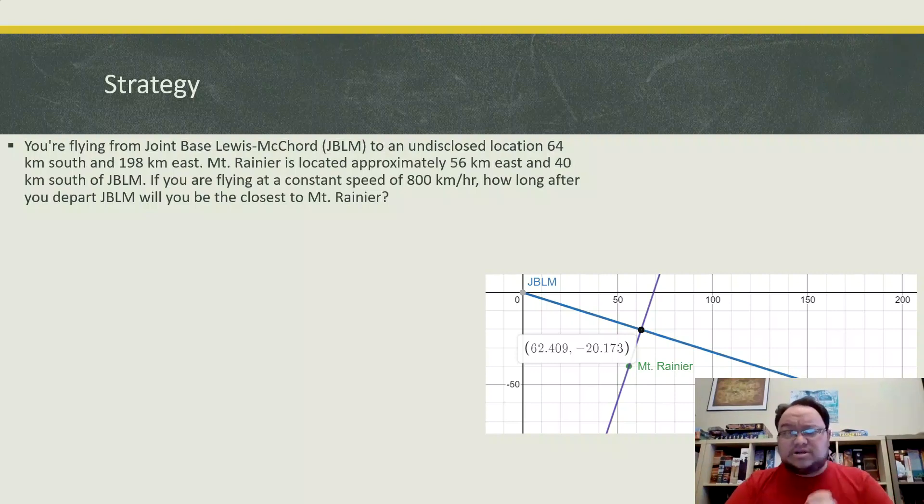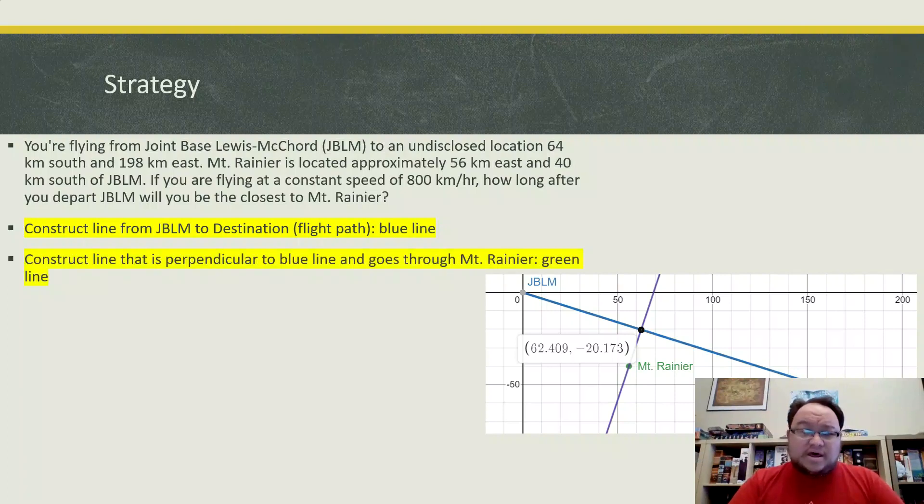So again, here's our question. This is what we figured out so far, where we've constructed the line. We've figured out what the line perpendicular to it's going to be, which is our shortest distance. And then we found the intersection, that's 62.409.